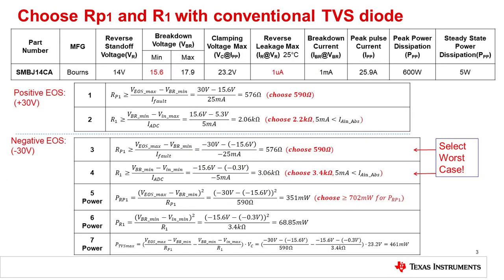In this slide, we will select a series current limiting resistor RP1 for the TVS diode, and the resistor R1, which is used to limit the fault current into the ADC IDAC output. In step 1, we calculate the value of RP1 required to limit the input current to 25 milliamps for a +40 volt overstress signal. A worst case fault current of 25 milliamps was selected, as it keeps the power dissipation to reasonable levels, but also keeps the series resistance RP1 low enough so that it does not violate compliance limitations. In step 2, we calculate the value of RP1 required to limit the input current to 5 milliamps when the +40 volt overstress signal is applied. The absolute maximum input current rating for the ADS124S08 is plus or minus 10 milliamps, so the fault current is limited to 5 milliamps for some margin for safety.